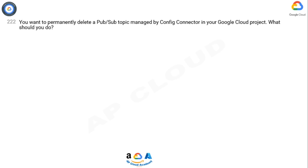Question 222. You want to permanently delete a Pub/Sub topic managed by Config Connector in your Google Cloud project. What should you do?